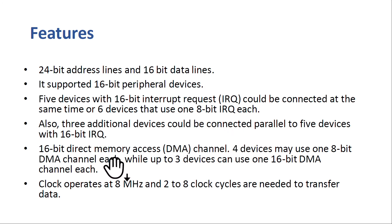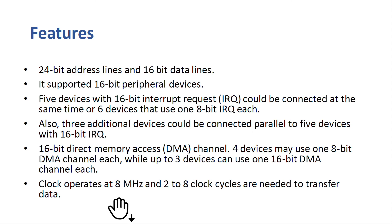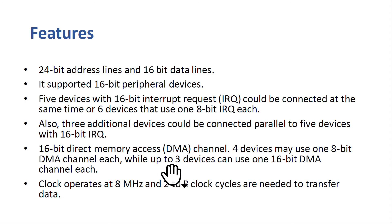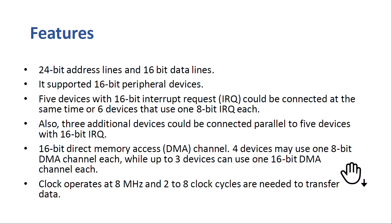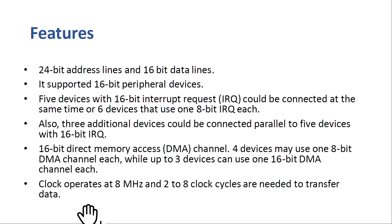Three additional devices could be connected in parallel to five devices with 16-bit IRQ using a 16-bit Direct Memory Access (DMA) channel. DMA allows hardware subsystems to access the main system memory without involving the CPU. Four devices may use one 8-bit DMA channel each, while up to three devices can use one 16-bit DMA channel each. The clock operates at 8 MHz and two to eight clock cycles are needed to transfer data.